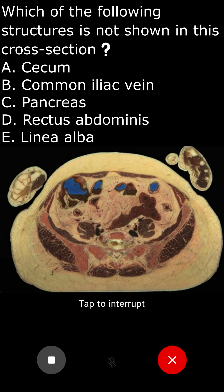Reason 3: Pancreas. The pancreas is located in the upper abdomen, typically at the level of the L1-L2 vertebrae. It is not seen in cross-sectional images of the pelvis or lower abdomen.